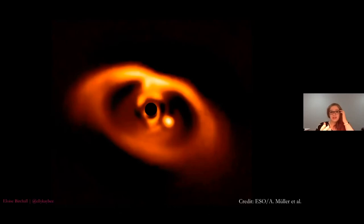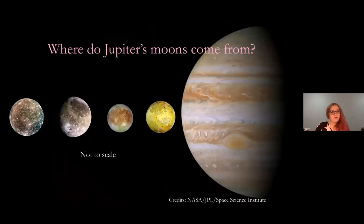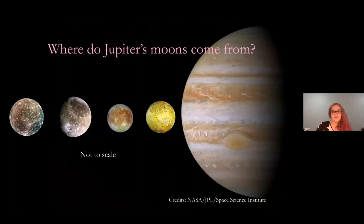This is a picture of PDS 70 — they've blocked out the star so you can see all the stuff around it. The blob here, PDS 70b, is a baby planet — how cool is that! And over here is PDS 70c, which actually has a ring of material around it still. Not only is it a baby planet, but it's a baby planet with a ring of material, and that's really cool because that's how we think Jupiter's moons formed — similar to how a star forms planets from a disk, a big planet with a disk of stuff around it can make moons from the leftovers.